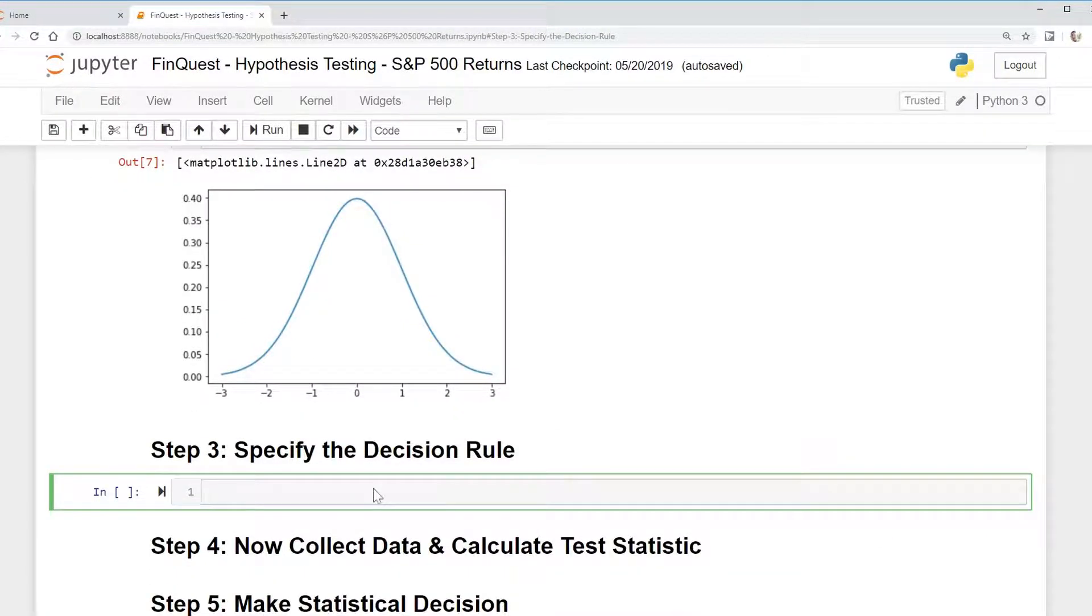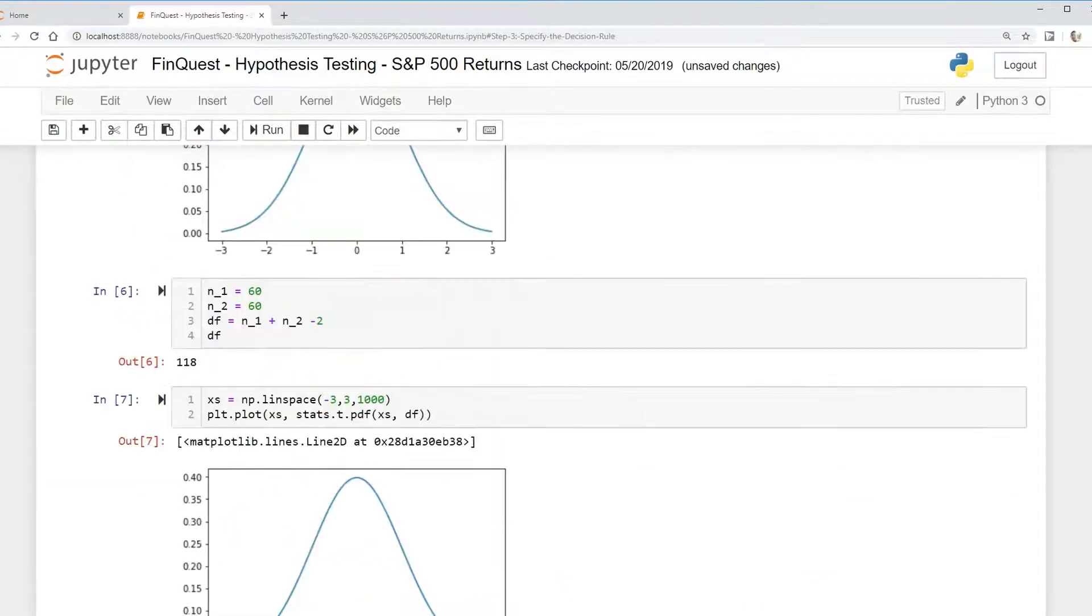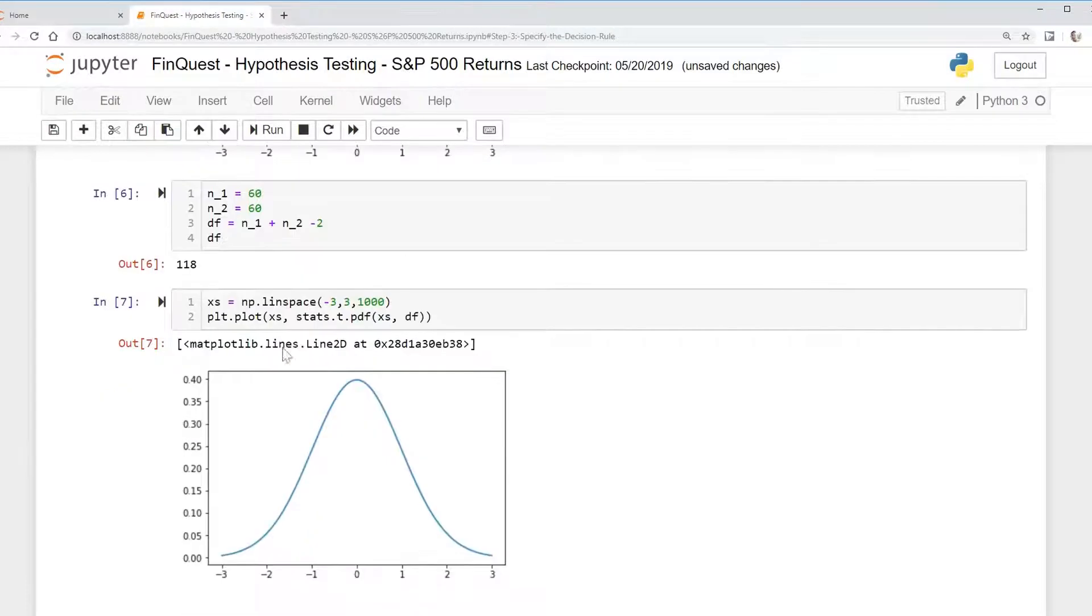So we've already imported stats and what we can do is say stats dot t dot isf and we need to determine our level of confidence. So we're going to use a 95% confidence level so we can say 0.05 significance level and we've also determined our degrees of freedom df and that was 118.